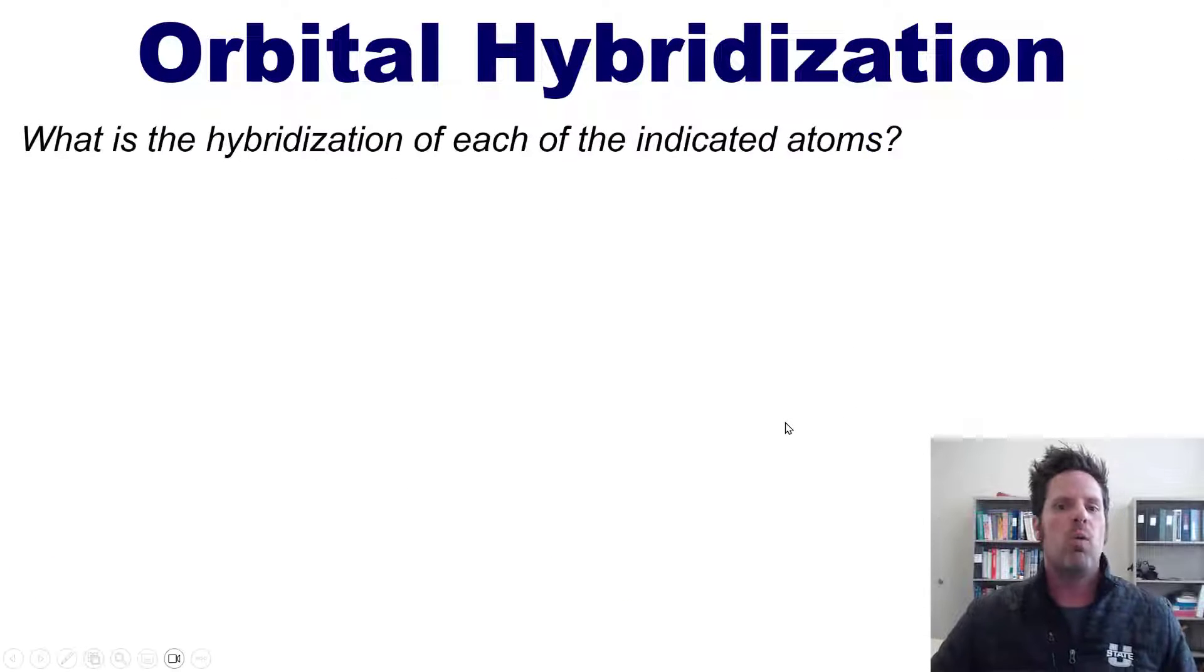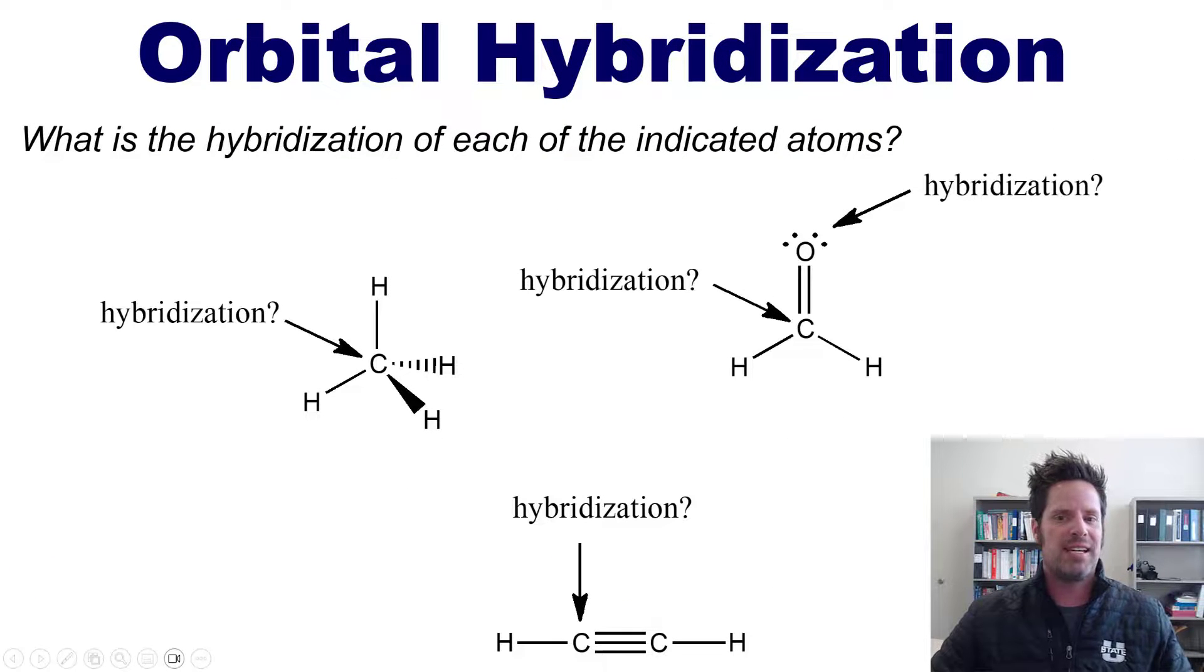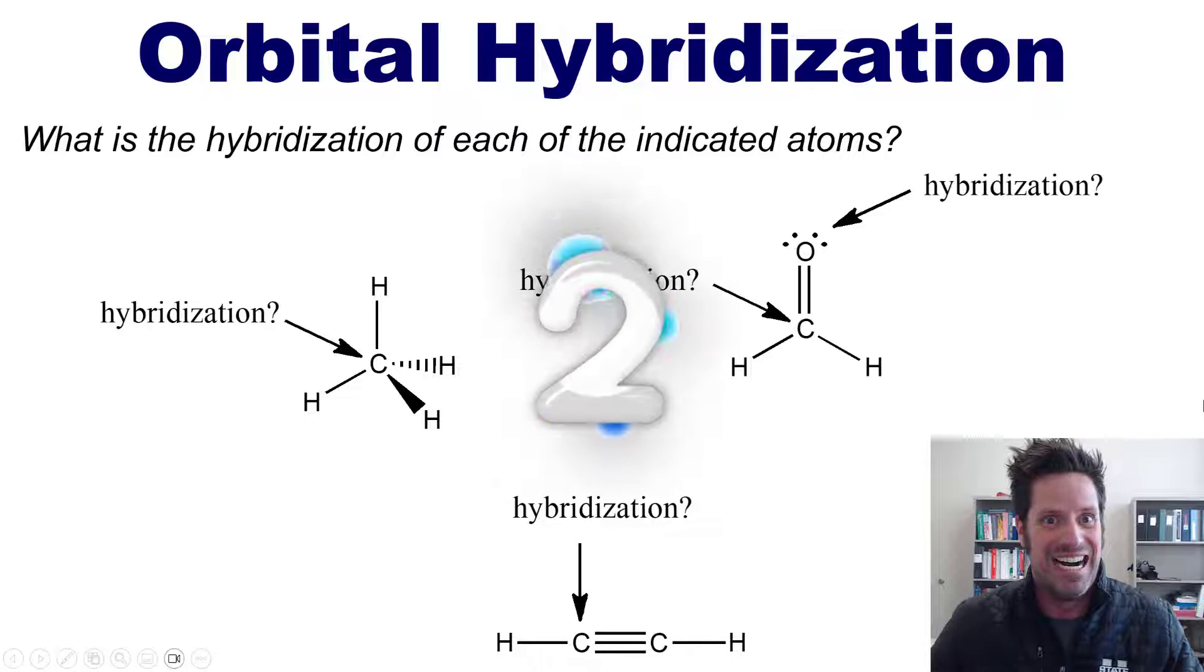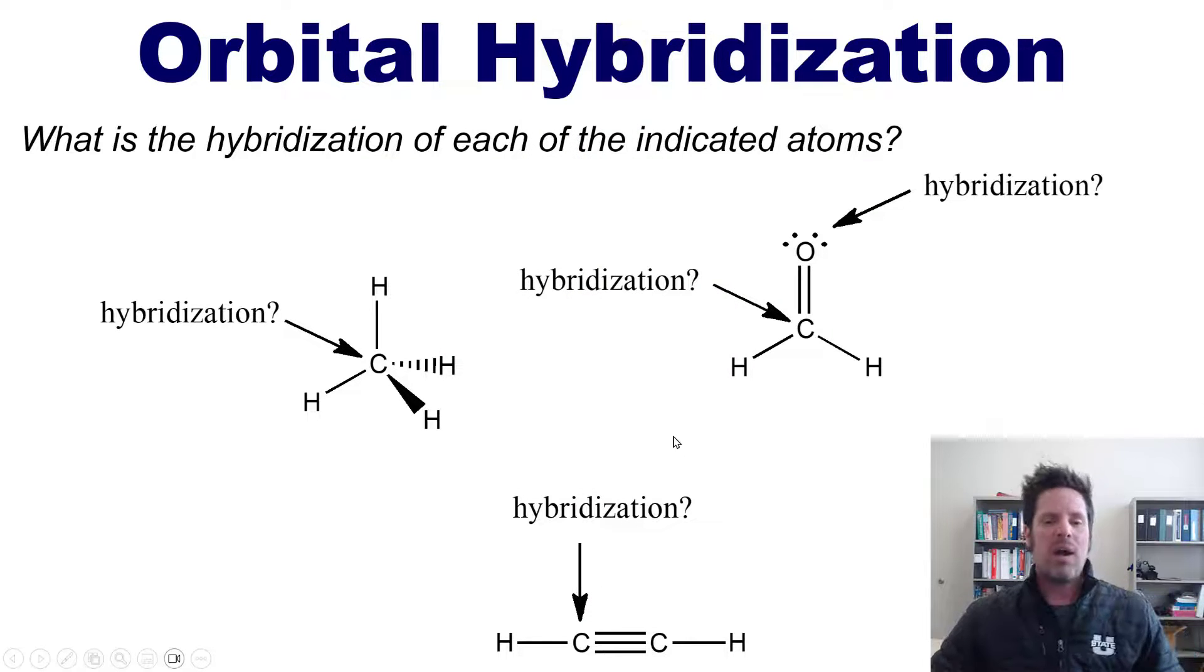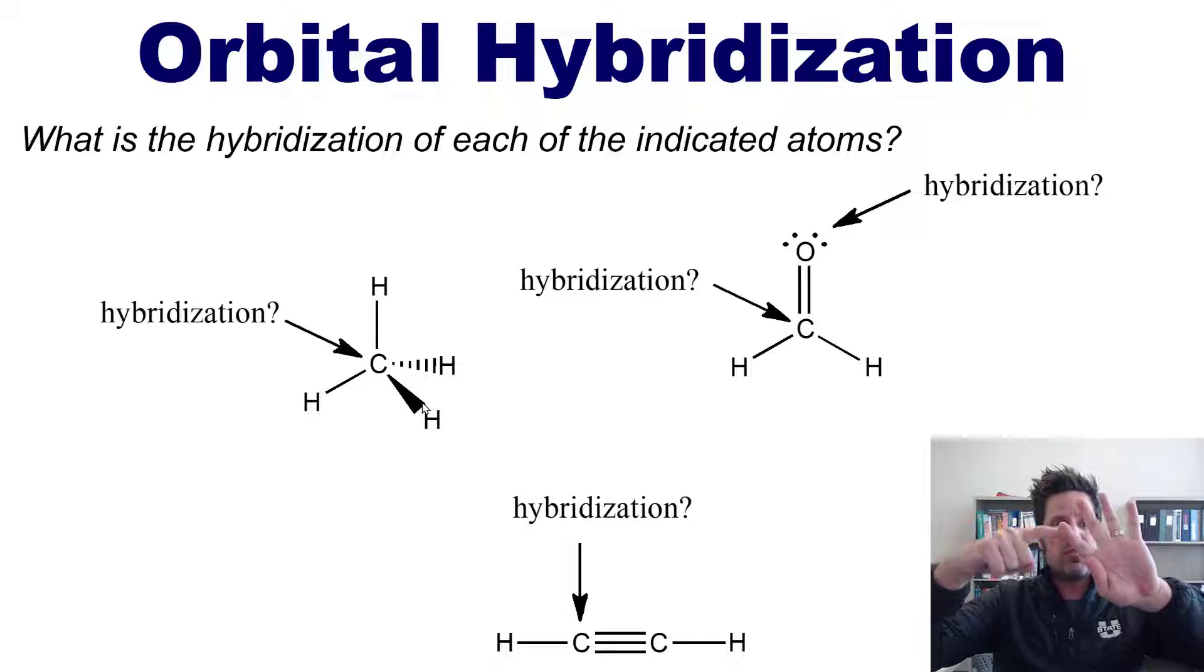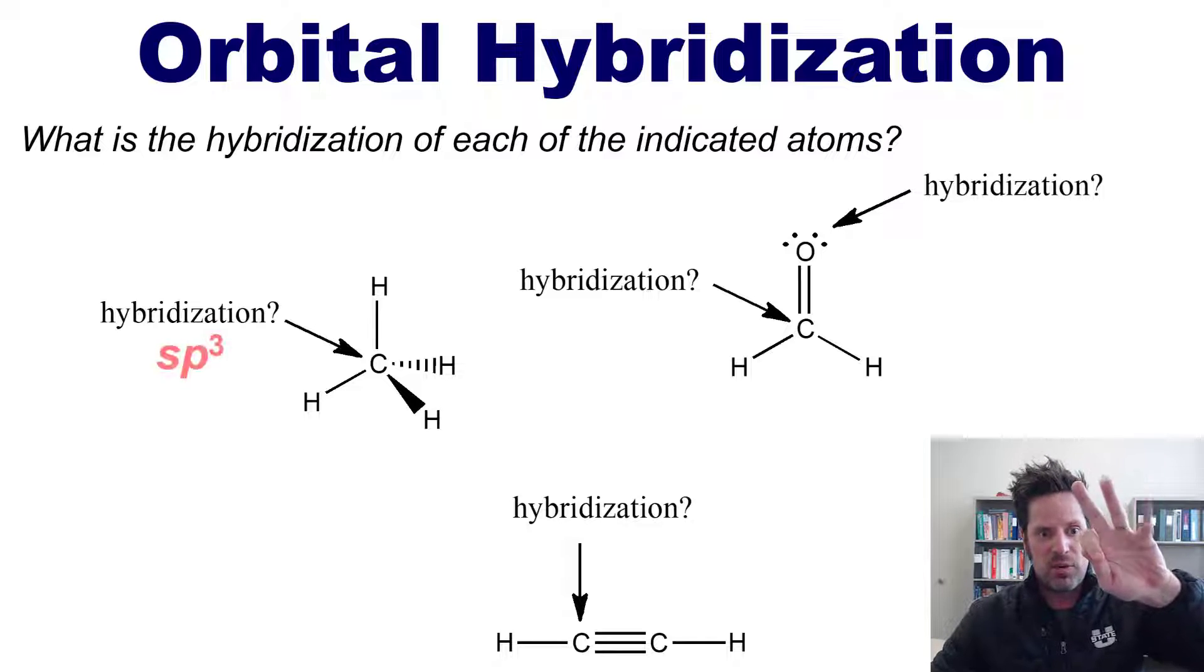Let's consider then some examples. What is the hybridization of each of the indicated atoms? All right, to apply what we just learned, we just look at the central atom and count how many things are around it. You can see that the central carbon atom is surrounded by four things, that is, four hydrogen atoms. So I hold up four fingers, and I note that the first finger will belong to s, and the remaining fingers will belong to p's. So I've got sp3.